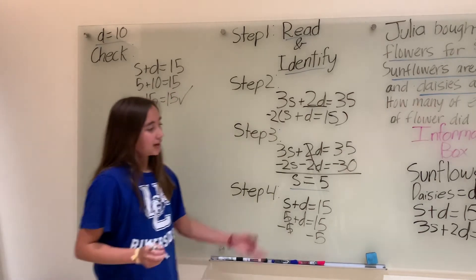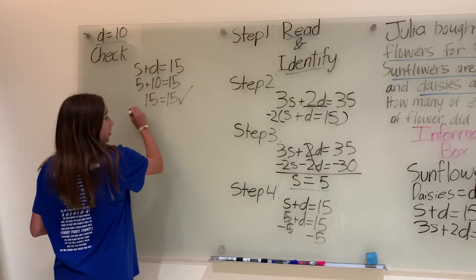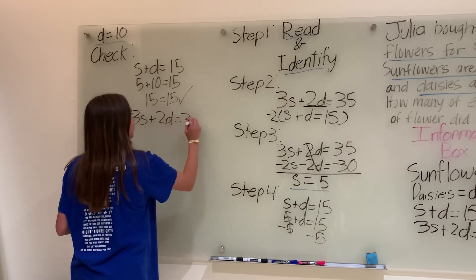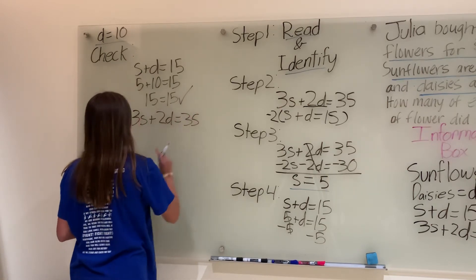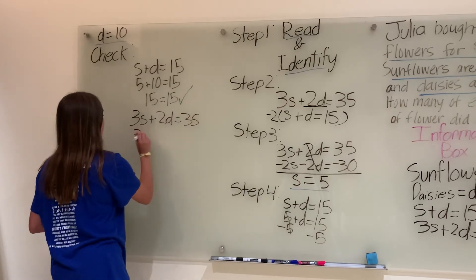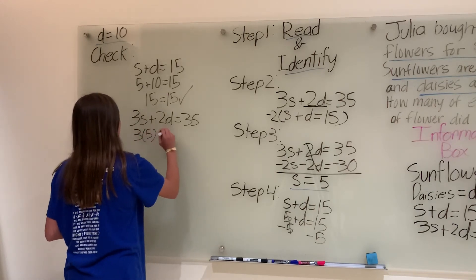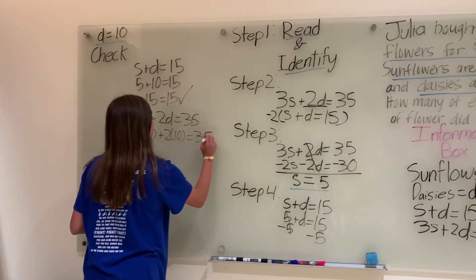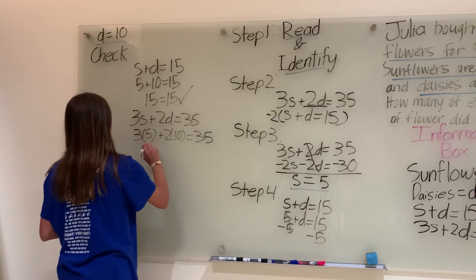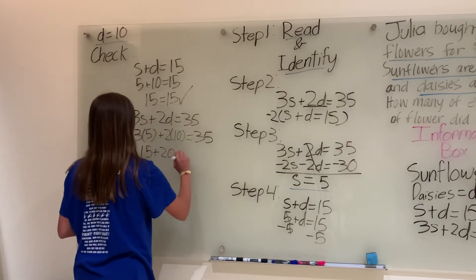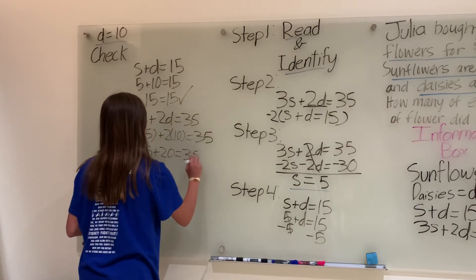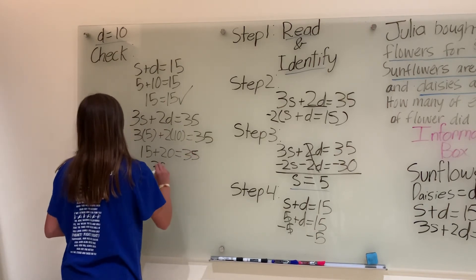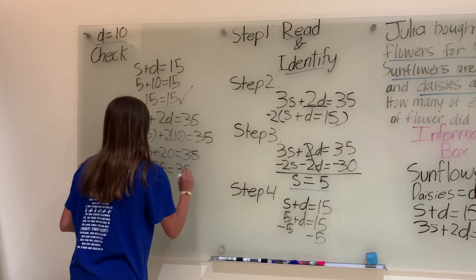Now on to our more complex equation, we have 3s plus 2d equals 35. Plugging in, 3 times 5 plus 2 times 10 equals 35. 15 plus 20 equals 35. 35 equals 35. They match, it's correct.